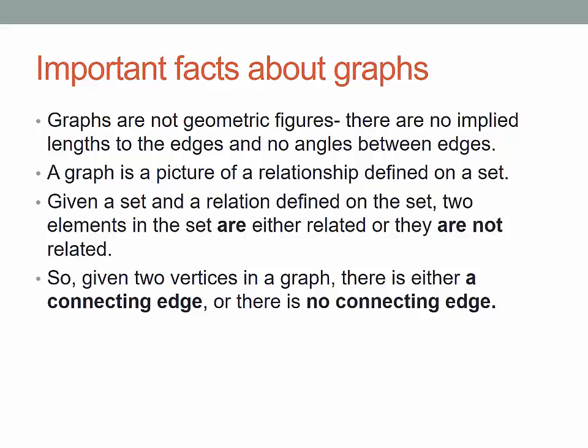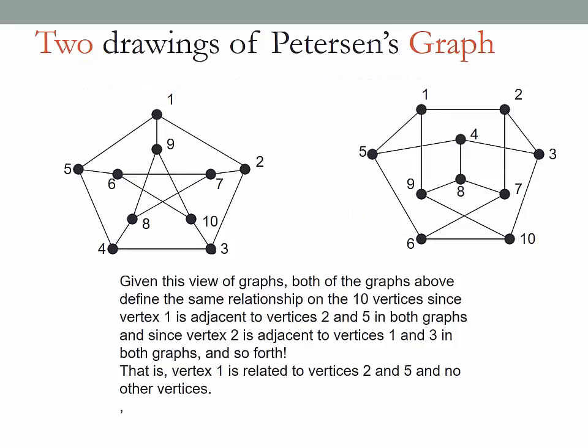So two elements are either related or not if the relationship is well defined. So two vertices are either connected or not according to the relationship. That's why it really doesn't matter how you draw it so long as you preserve the relationships. So as we've seen before, these are two different drawings, but they're the same exact graph.